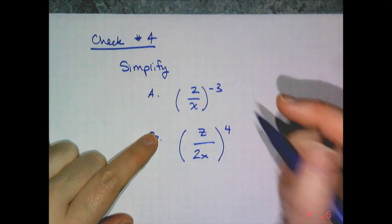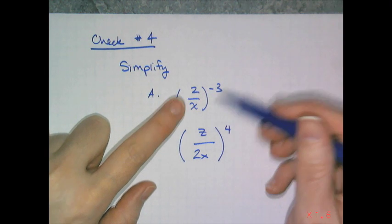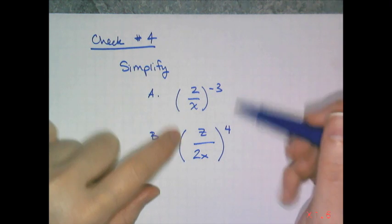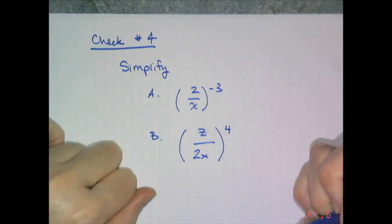Simplify these two examples: 2 over x to the negative 3, and z over 2x, all raised to the 4th power.